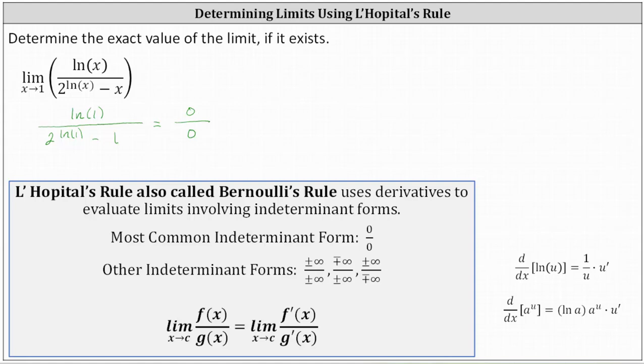Because of this, we can apply L'Hôpital's rule to help us determine the limit. L'Hôpital's rule, also called Bernoulli's rule, uses derivatives to evaluate limits involving the indeterminate forms shown below. L'Hôpital's rule states the limit as x approaches c of f(x) divided by g(x) equals the limit as x approaches c of f′(x) divided by g′(x). To apply L'Hôpital's rule, we differentiate the numerator and denominator and then see if we can determine this new limit.